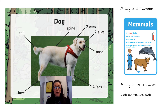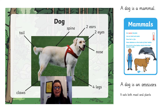Here is a dog, the type of dog we keep at home as our pet. It has a tail, claws, four legs, a nose, two eyes, two ears and a spine. Dogs are mammals which means they have fur and they give birth to live babies which drink their mother's milk. A dog eats both meat and plants, which makes a dog an omnivore.